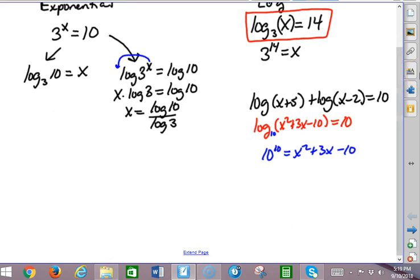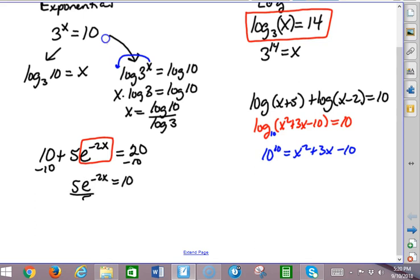Similarly, what if I have an exponent thing that looks like this, maybe 10 plus 5e to the negative 2x equals 3 or something like that, okay? So, I need, actually, that would not probably work. Let me make this a 20, all right? So, I would have to, I need to get down to something to some power equals something. So, I need, my goal is to get this part all by itself, all right? So, I'm going to subtract 10, I'm going to have 5e to the negative 2x equals 10, then I'm going to divide by 5, then I'm going to have e to the negative 2x equals 2.